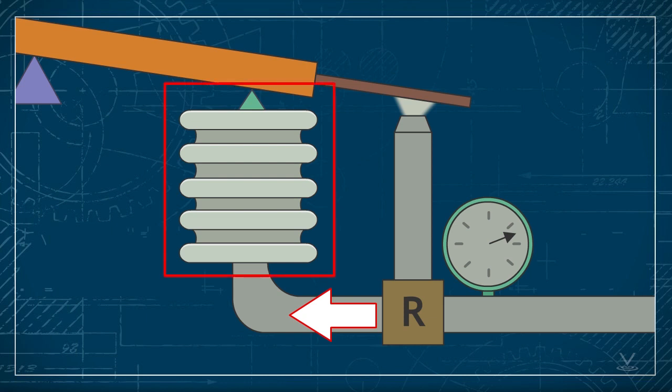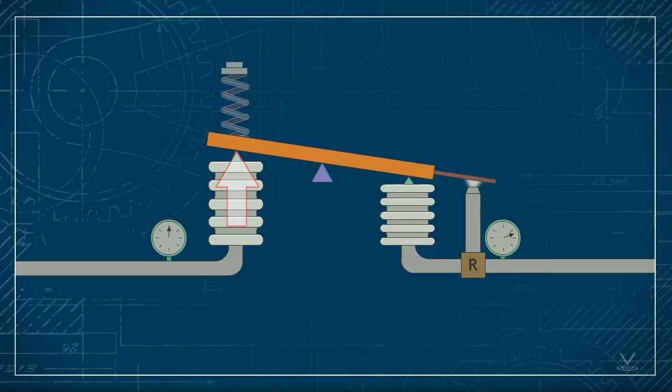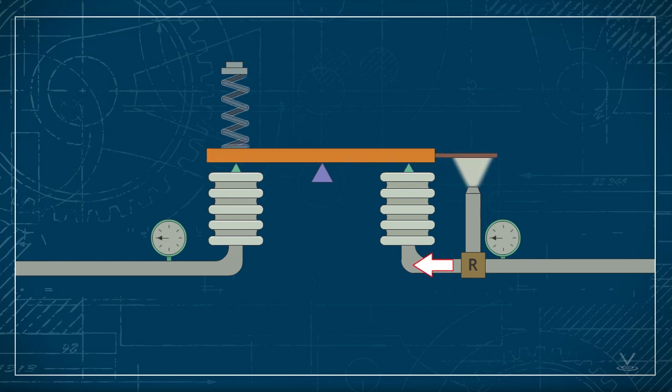For one, it's fed to the output balancing mechanism, another bellows, which we'll call a feedback bellows. If input changes, the new output causes the feedback bellows to bring the controller back into balance.